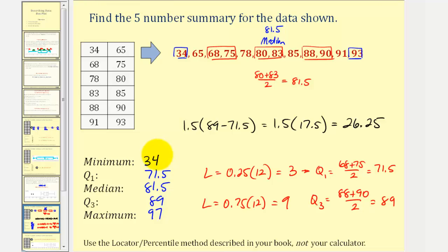So we'll go ahead and highlight this. We'll actually represent 34 as a point. Notice how the next value would be 65. So we'll actually extend our whisker out to 65. Notice how 65 is not an outlier. So we'll extend the whisker out to 65 and put a point at 34.